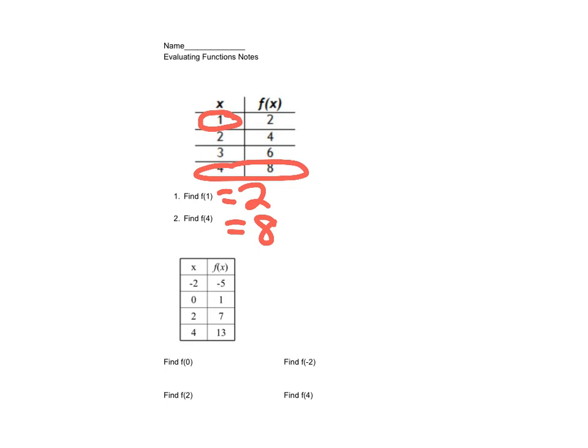Second example, f at 0. That's right here, so f at 0 is 1. f at 2, find 2 in the input, read the output, that would be 7.